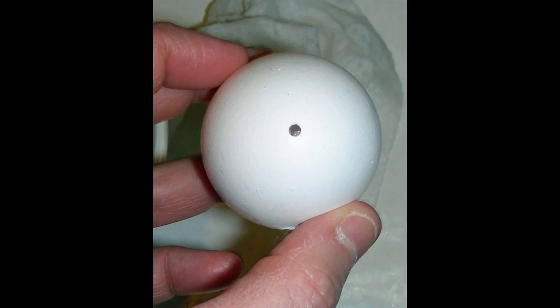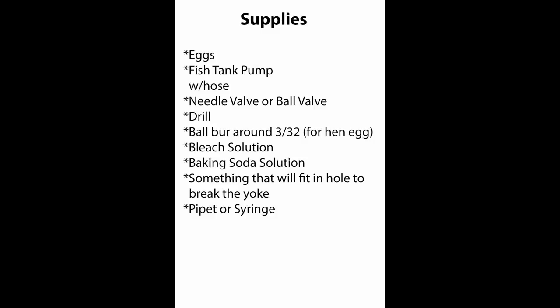You're going to need eggs of course, a fish tank pump with a hose, a needle valve or a ball valve (those are the type that blow up your basketballs or soccer balls), a drill, a ball burr around 3/32 for a hen egg, a bleach solution, a baking solution which we'll go over in the video, something that will fit in the hole to break up the yolk, and a pipette or a syringe so you can push the solution into the eggs.